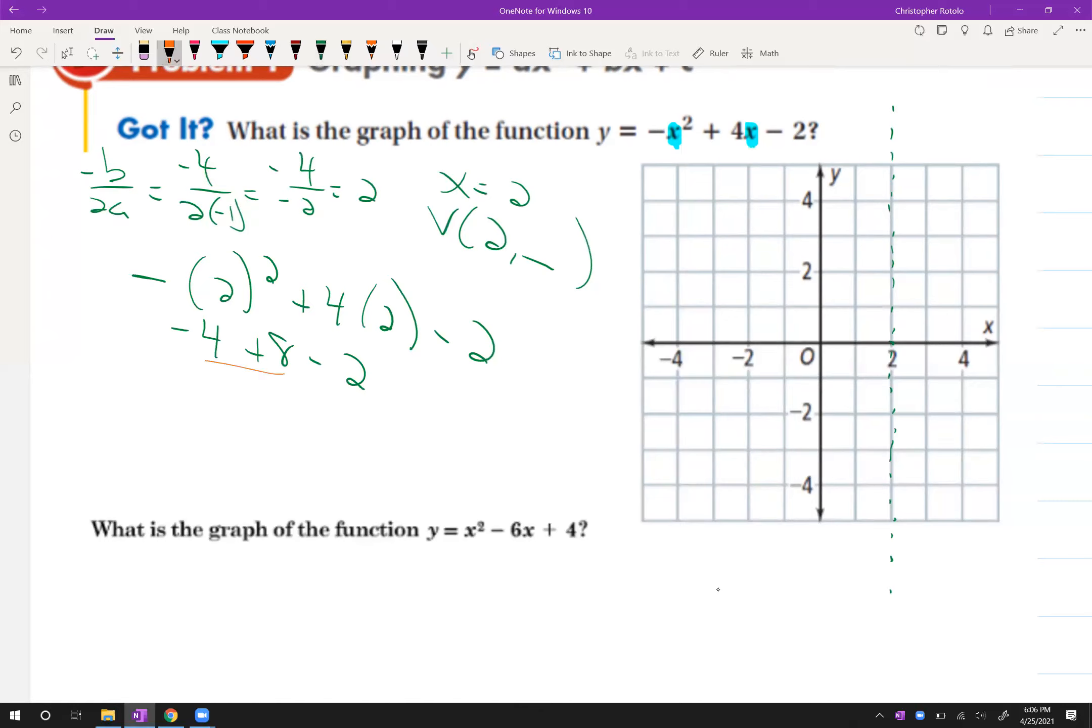So that means negative 4 plus 8 is going to turn into 4 minus 2 is 2. So 2, 2 is the vertex. So I'm going to mark that 2, 2. So that gives me my vertex.